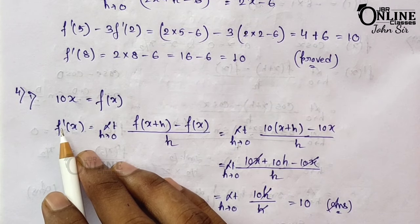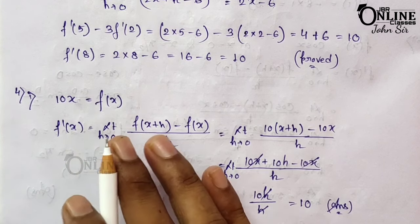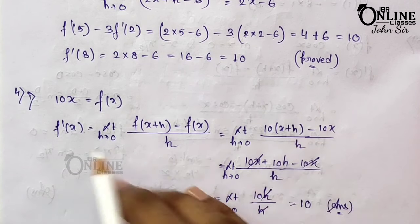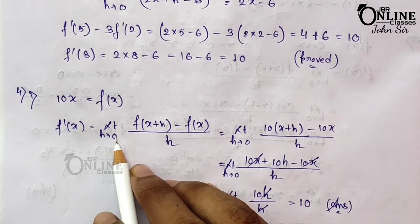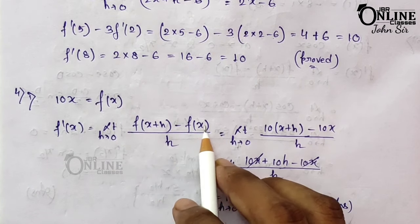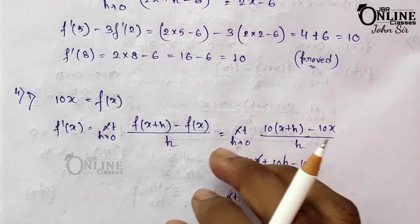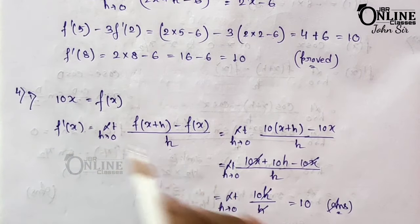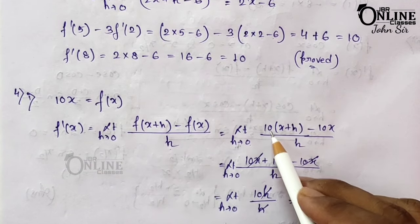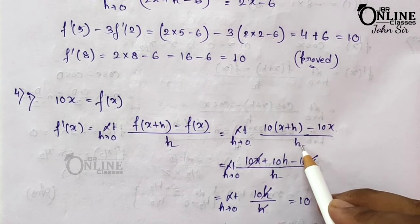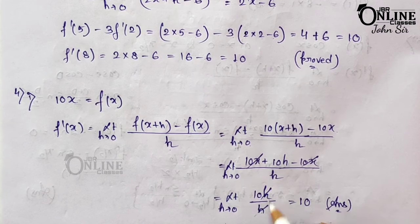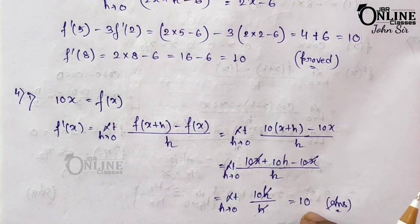Sum number 4: Find the derivatives of the following functions from the first principle. First principle means the definition of the derivative: f'(x) = limit h→0 of [f(x+h) - f(x)] / h. Here f(x) = 10x. So limit h→0 of [10(x+h) - 10x] / h = 10h/h = 10. So the final answer is 10.